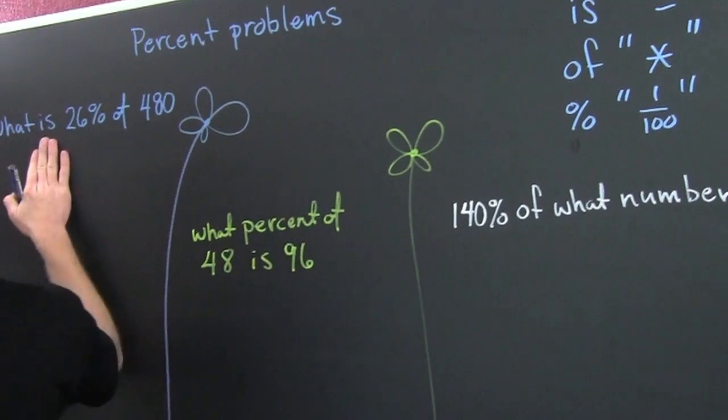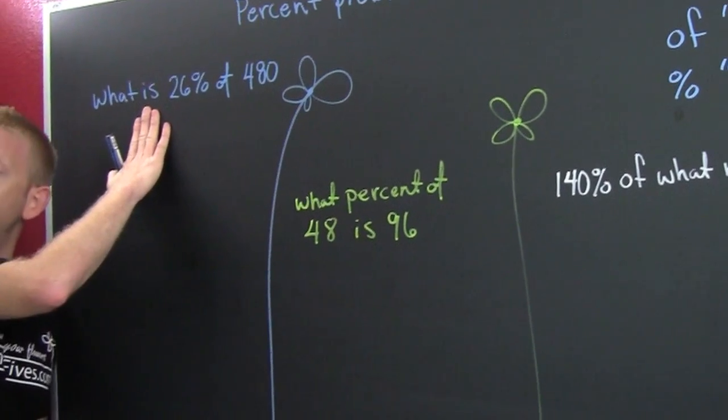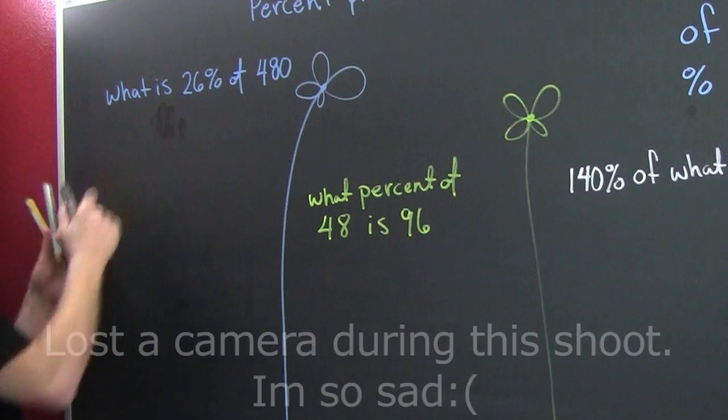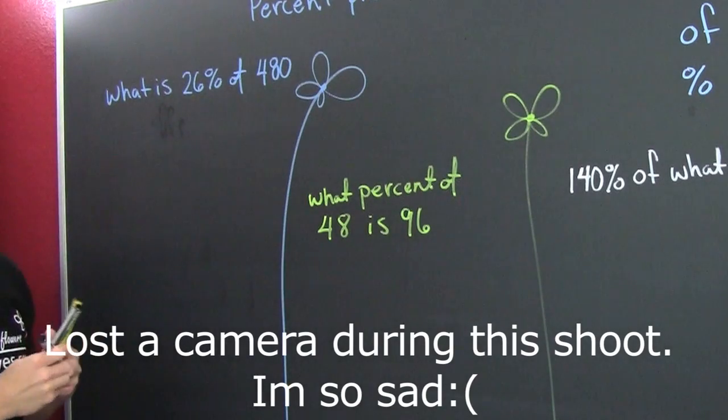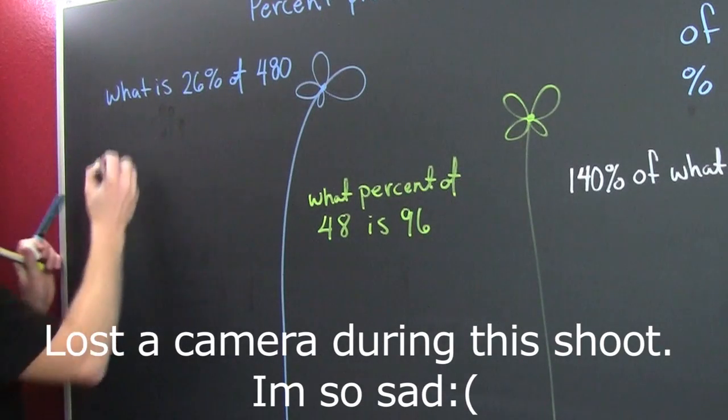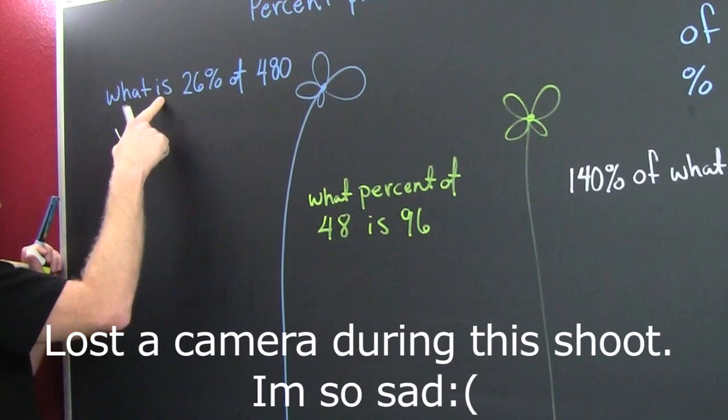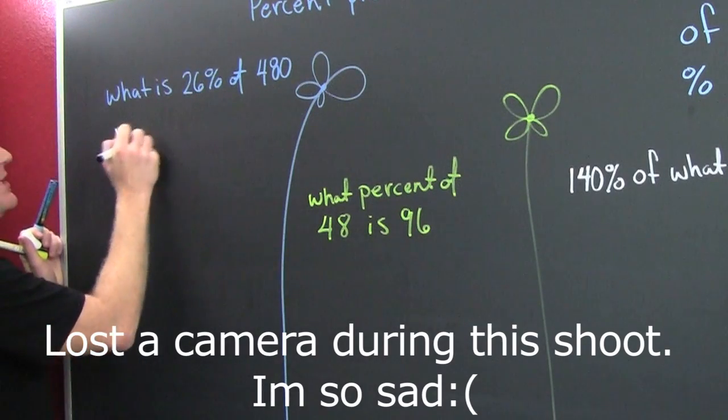So let's go, let's go. We need to translate this. What do I mean? When I see the word what, what do I put? I put x. What was is? Is is equal. So then we put equal.